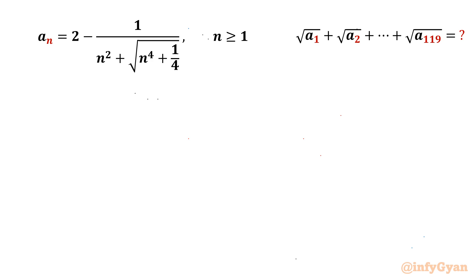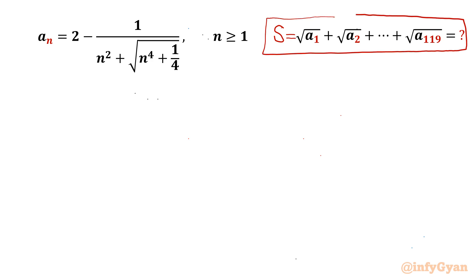Welcome back to InfiGyan, my dear friends. In this video we have one very interesting question from algebra. Here we have to evaluate the sum of square root of a₁ plus square root of a₂ up to square root of a₁₁₉, where aₙ equals 2 minus 1 over n² plus square root of n⁴ plus 1/4, where n is greater than or equal to 1.